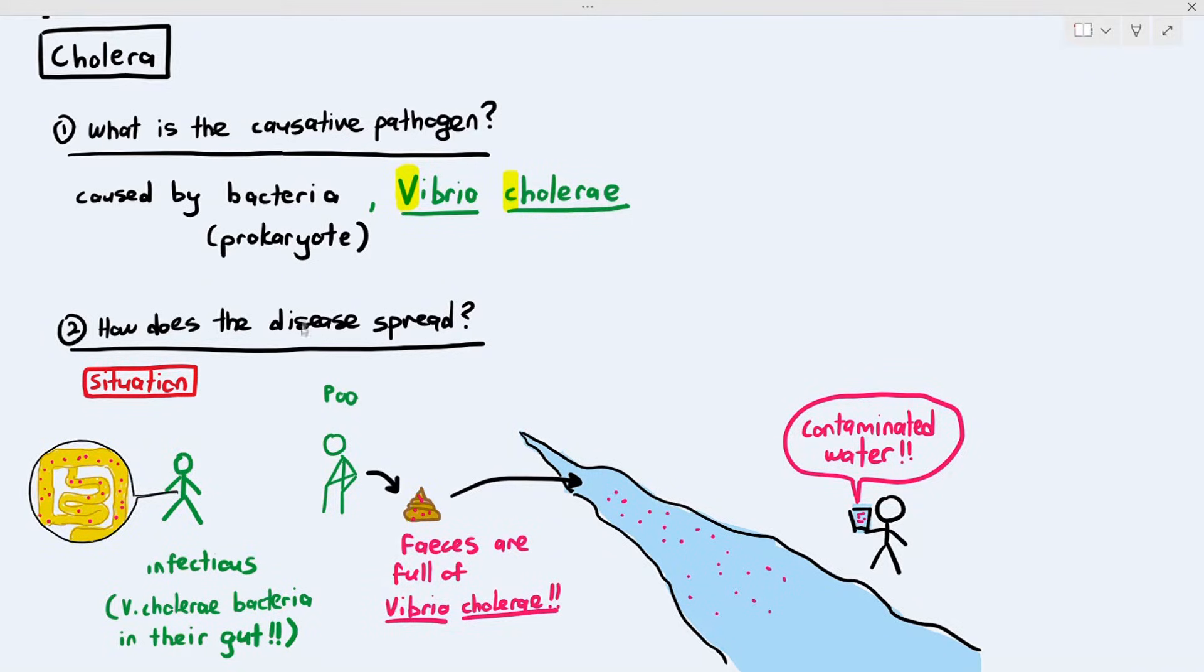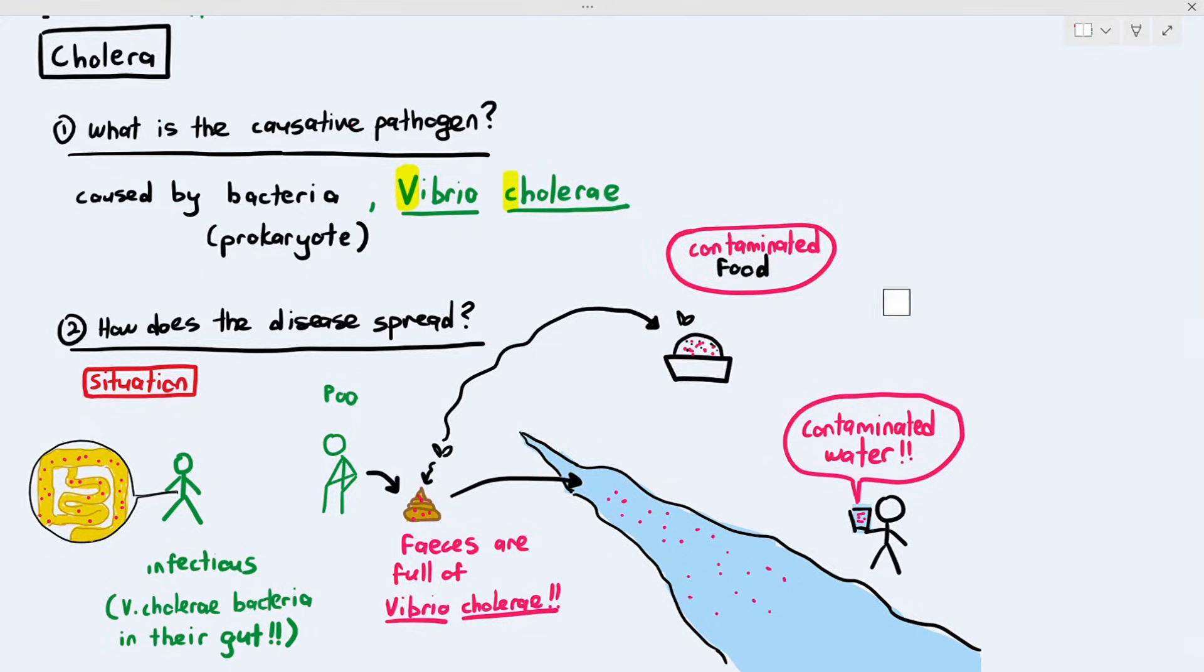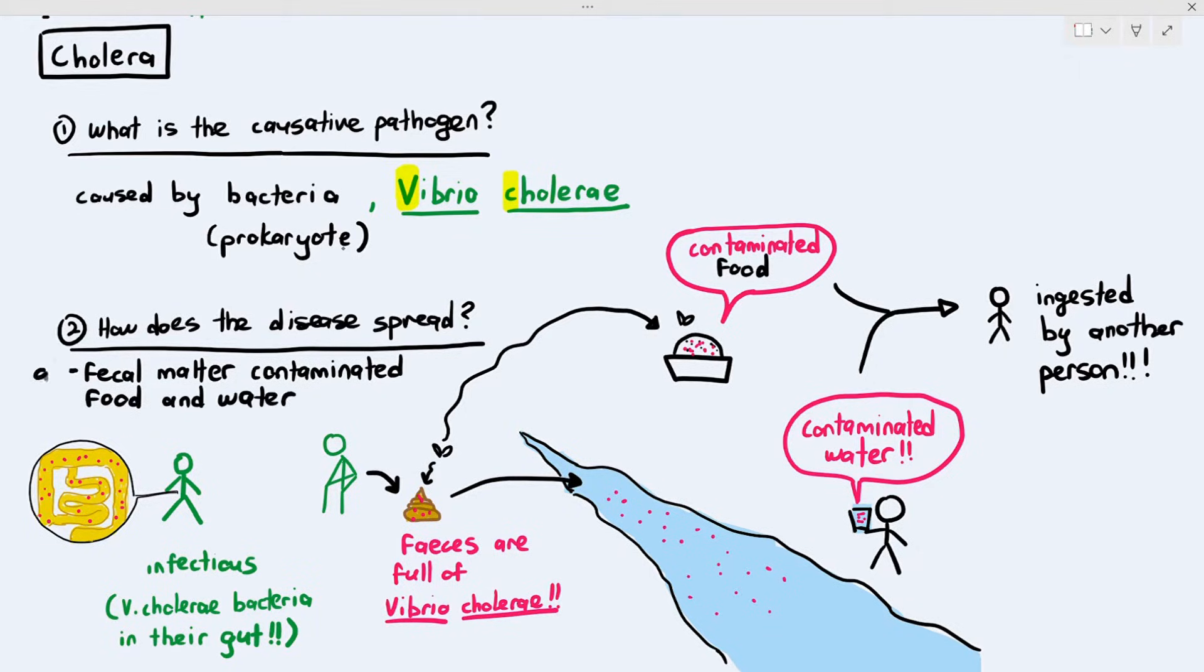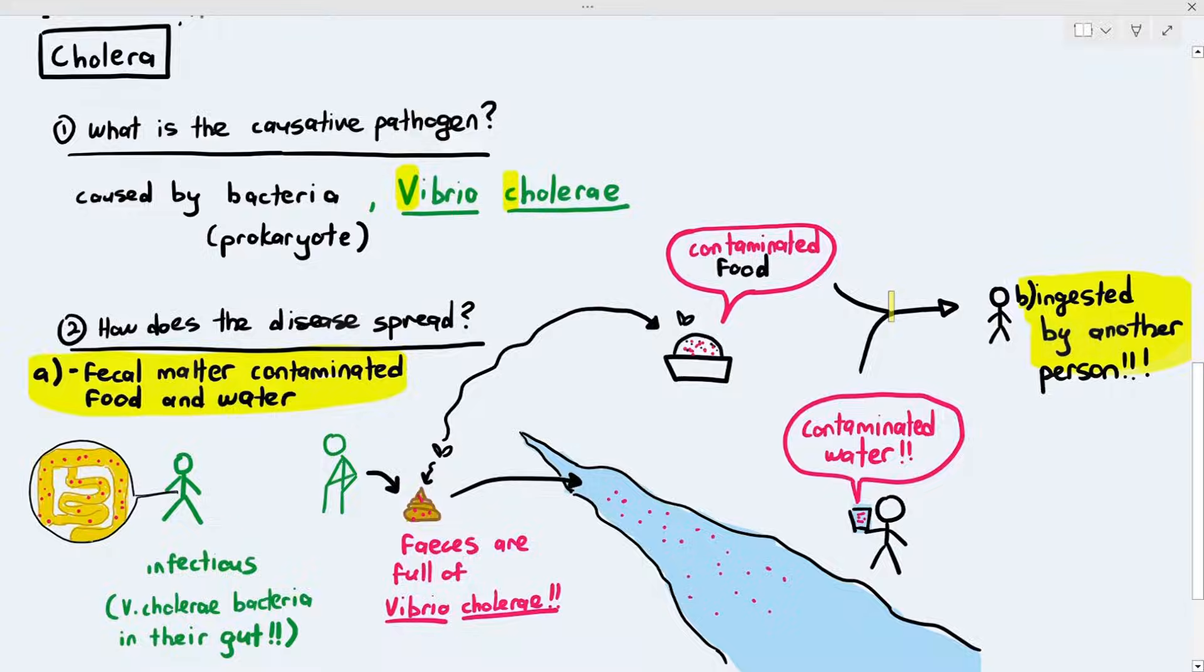Another way in which the bacteria can spread is a fly or a cockroach lands on the fecal matter, and then it will later go and land on the food. And thus now the food is also contaminated with the bacteria. The contaminated food and contaminated water are ingested by another person. These are the two ways in which cholera spreads. When you're asked in the exam how cholera spreads, you have to mention how it goes out of one person's body and how it goes into another person's body.